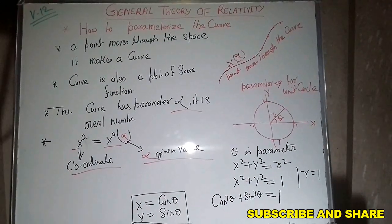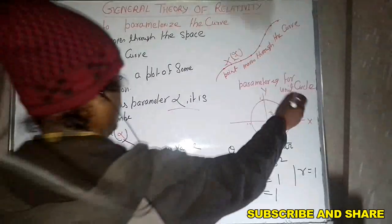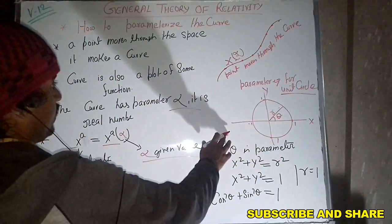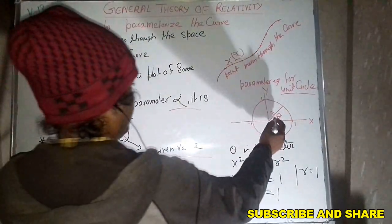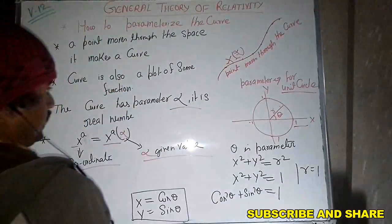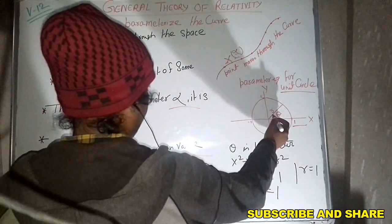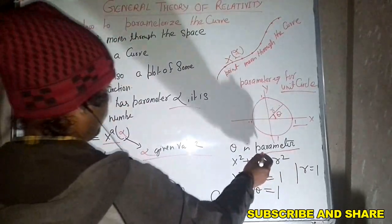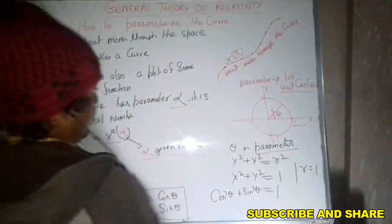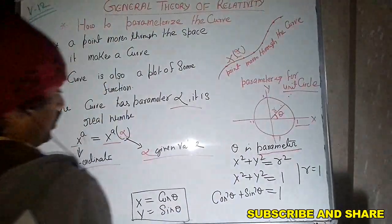Now we have to look at how to parameterize the unit circle. The unit circle means its radius has one unit length. Theta is the parameter. So we need to parameterize this unit circle.